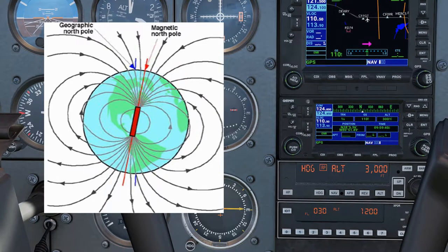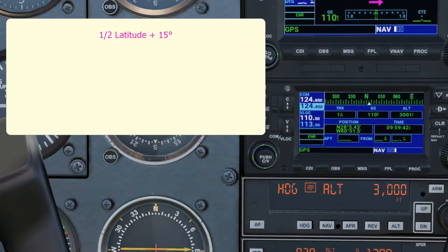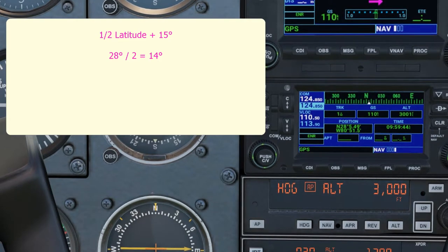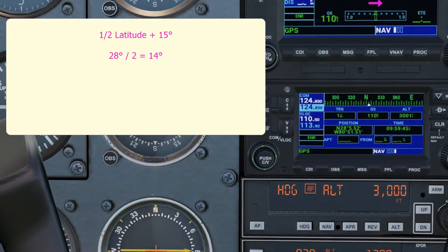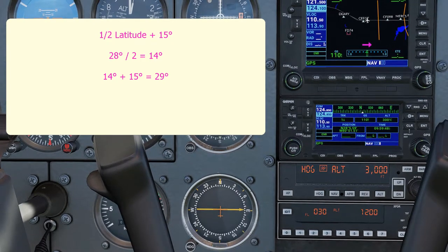We can therefore compensate for this error by using this general rule of thumb. Take half the latitude and plus 15 degrees. So in this case our latitude is 28 degrees, half of that is 14, and then plus 15 is 29 degrees, which we can call 30 as it's close enough.